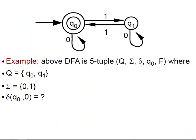Here is an example of a DFA, and this DFA is a 5-tuple Q, Σ, δ, q0, F. So Q here would be the set {q0, q1}, Σ is {0, 1}, and what is δ(q0, 0)? It's again q0, right? This is this arrow here.